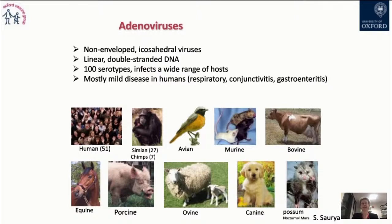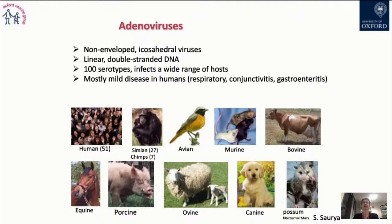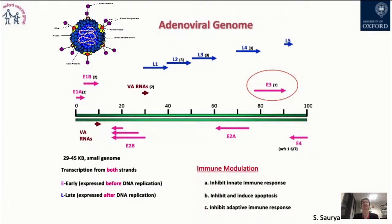Now I'm going to go into the vaccine developed by the Jenner Institute and the Oxford Vaccine Group against COVID-19. This vaccine is a subunit vaccine because it only focuses on the spike protein of the SARS-CoV-2 virus — just one protein on the outside of the virus. It is inserted as a genetic sequence into an adenovirus. Adenoviruses are non-enveloped icosahedral viruses with linear double-stranded DNA. There are more than 100 serotypes existing all over the world, and they infect a wide range of hosts. The human serotypes mostly cause mild disease — the common cold, conjunctivitis, or mild gastroenteritis.